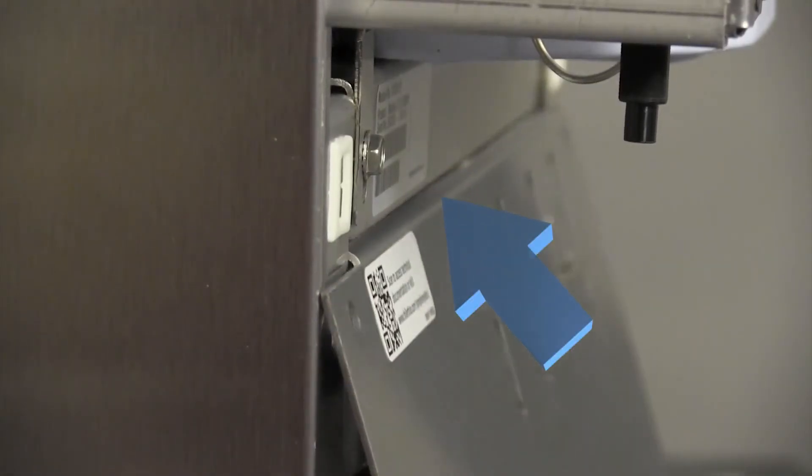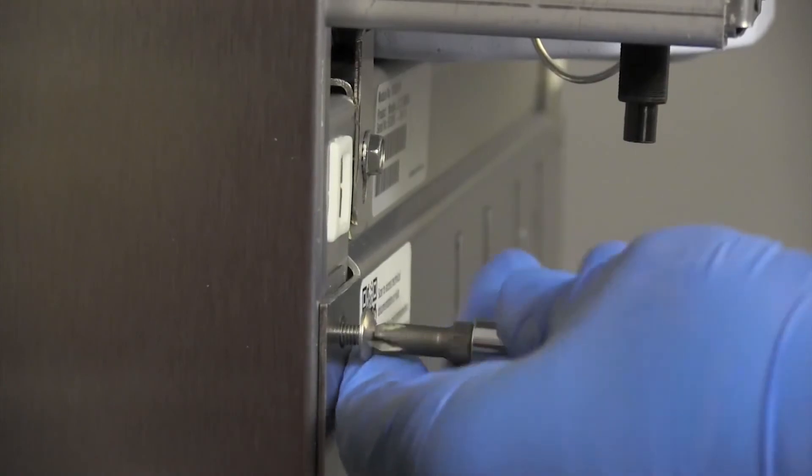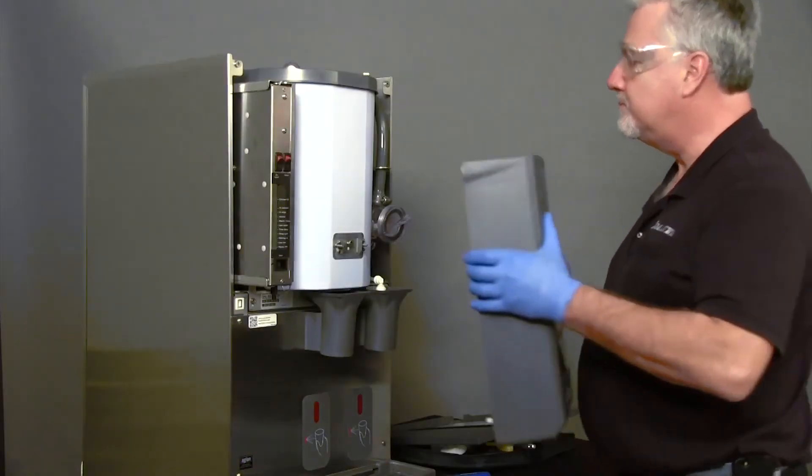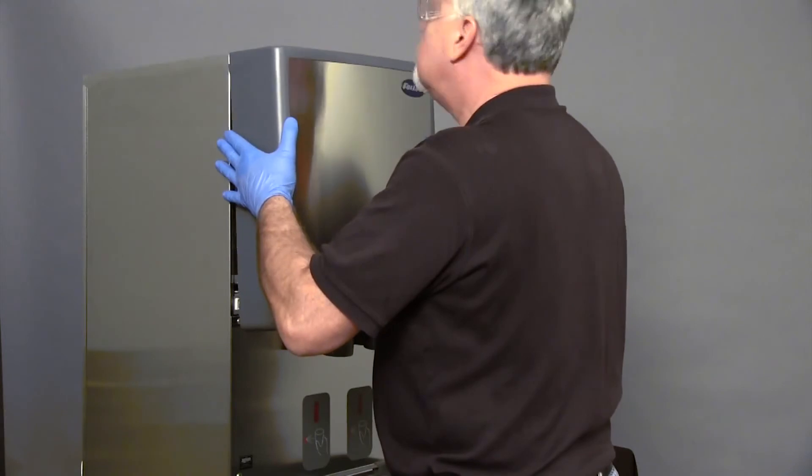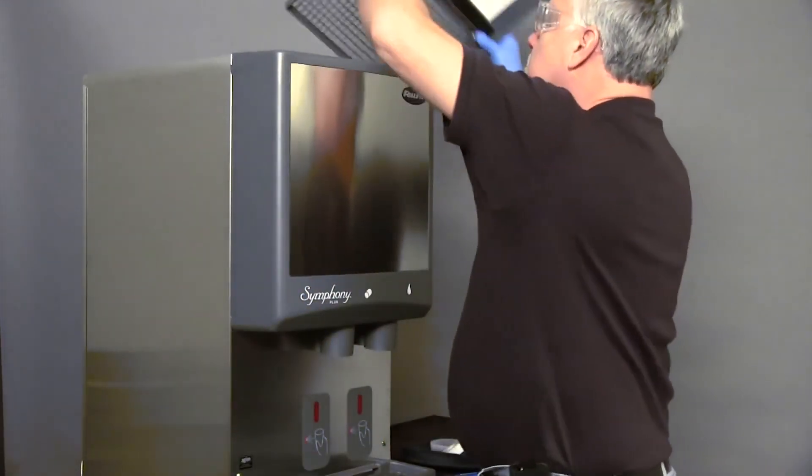When reinstalling the splash panel, be sure that the top of the panel is engaged behind the support bracket to ensure that any water drippage runs down the front of the panel. It is easier to reinstall the front cover of the dispenser by first installing the cover, then the dispenser lid.